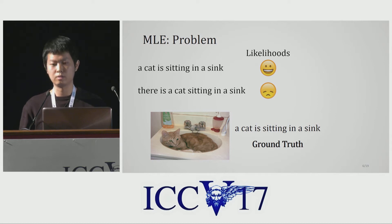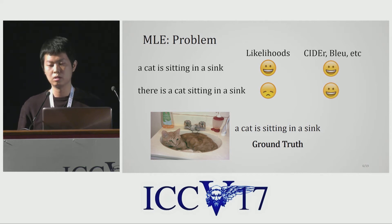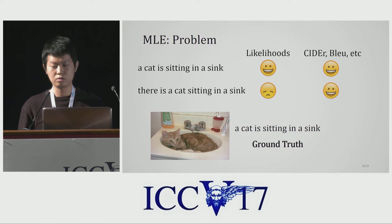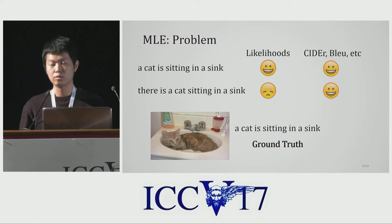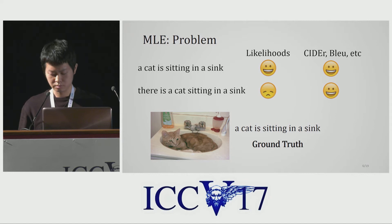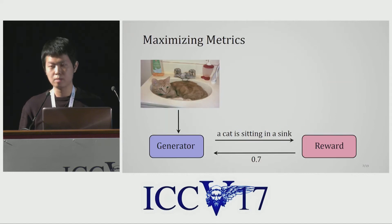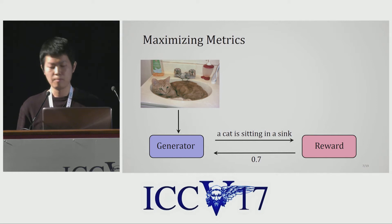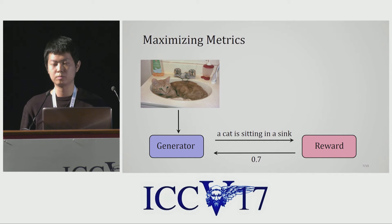So how do we solve this? People noticed that evaluation metrics such as BLEU and CIDEr think these two captions are both good, because they match n-grams with the ground truth regardless of the positions of those n-grams in the original sentences. Inspired by this, recent works proposed to directly optimize on the evaluation metrics using reinforcement learning.